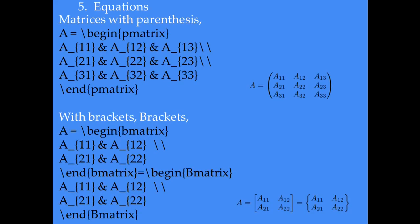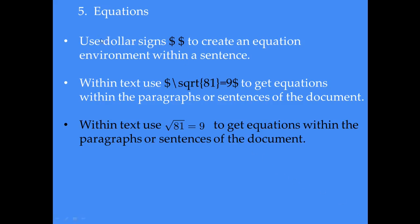We also have the ability to put in matrices within our documents. You can see an example of a matrix with parentheses. Each row in the matrix has terms separated by the ampersand (&) symbol, and each row is terminated by two backslashes. The last row does not need a backslash. You can also generate matrices with square brackets and curly braces. If you want to write a formula within the main text without using the equation environment, you can use two dollar signs and put your equation between them.